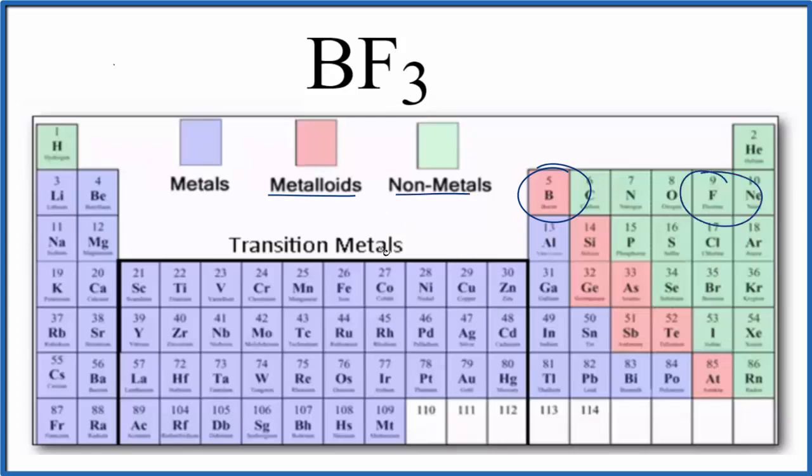When we have a metalloid and a non-metal, we're thinking that we have a covalent compound, also called a molecular compound.